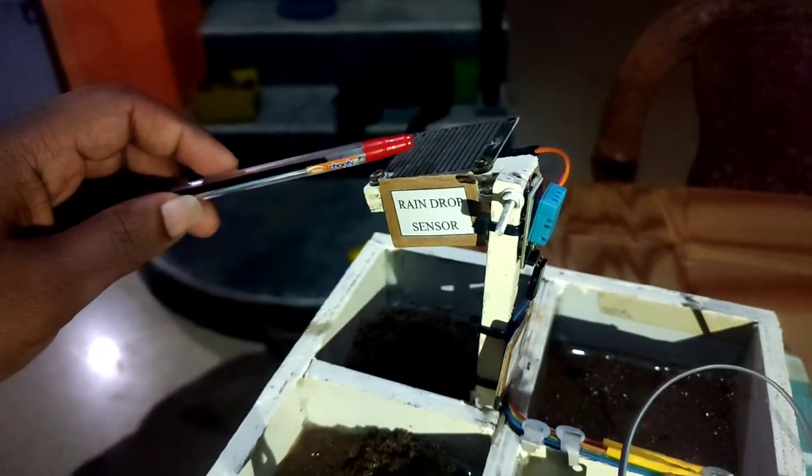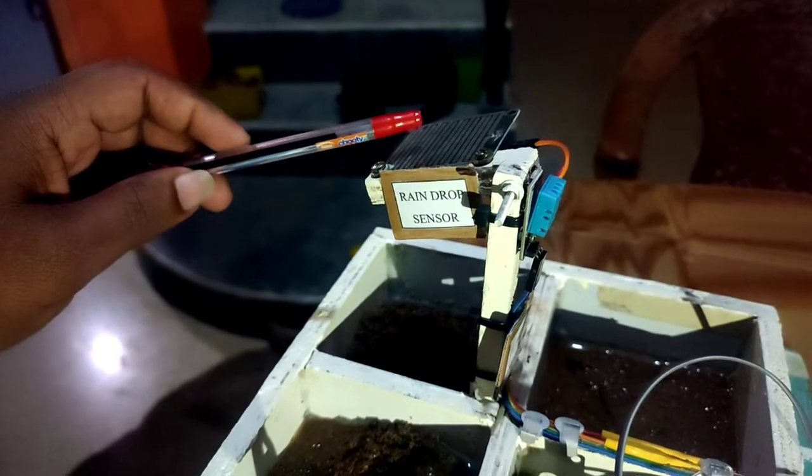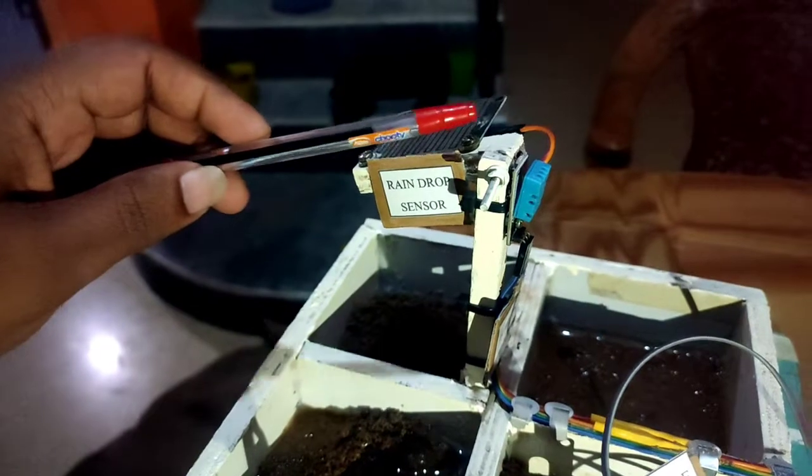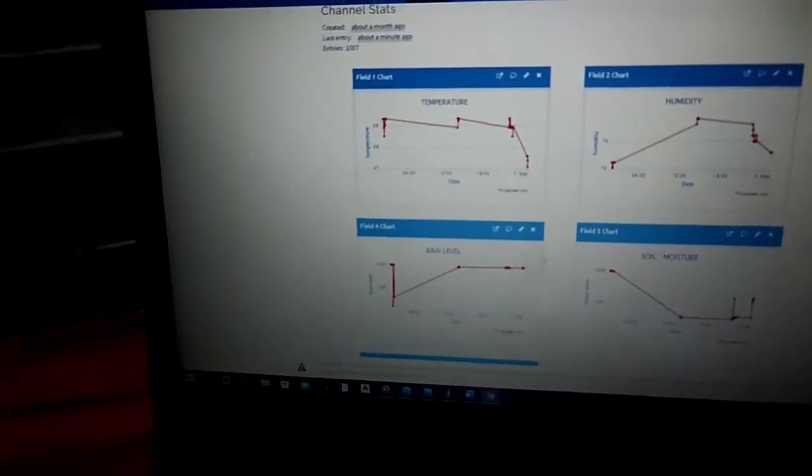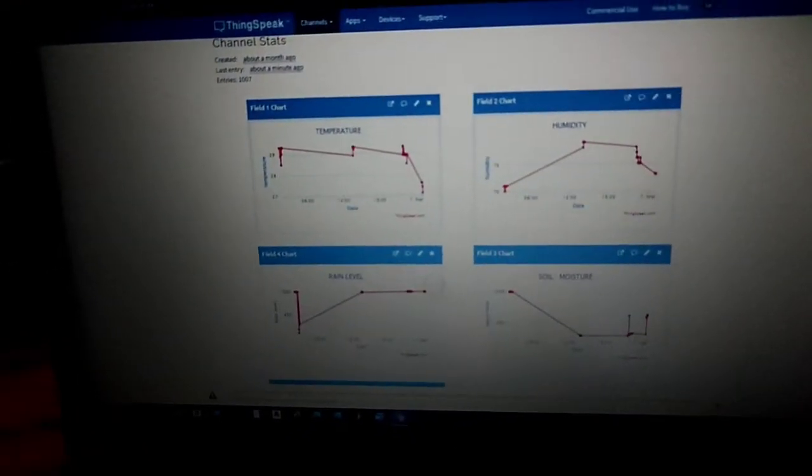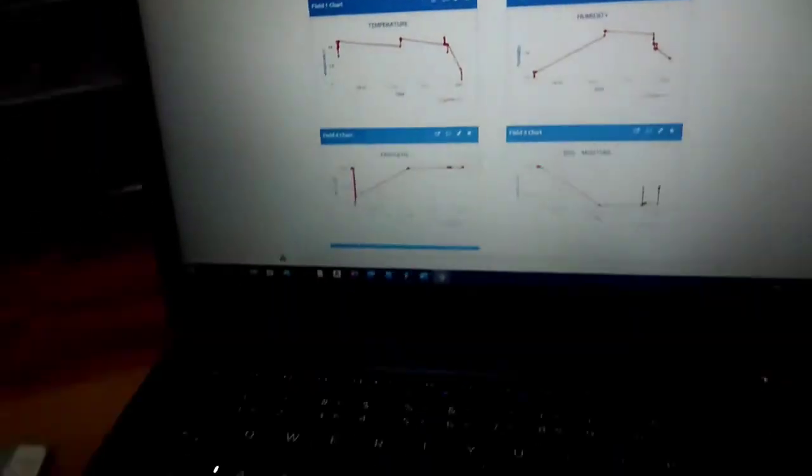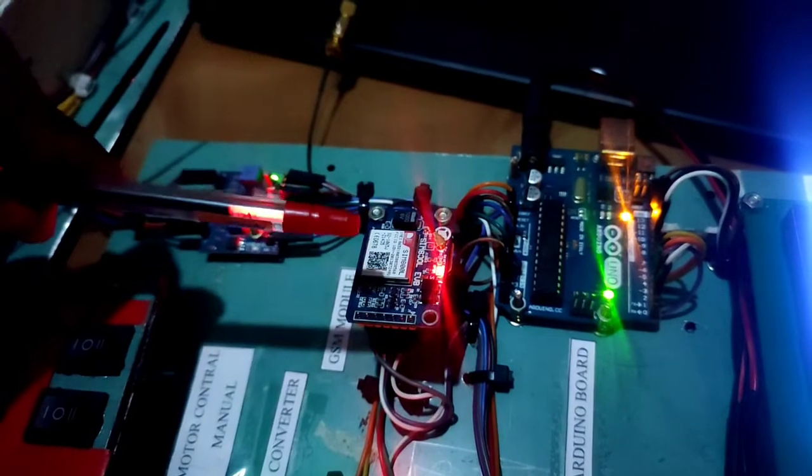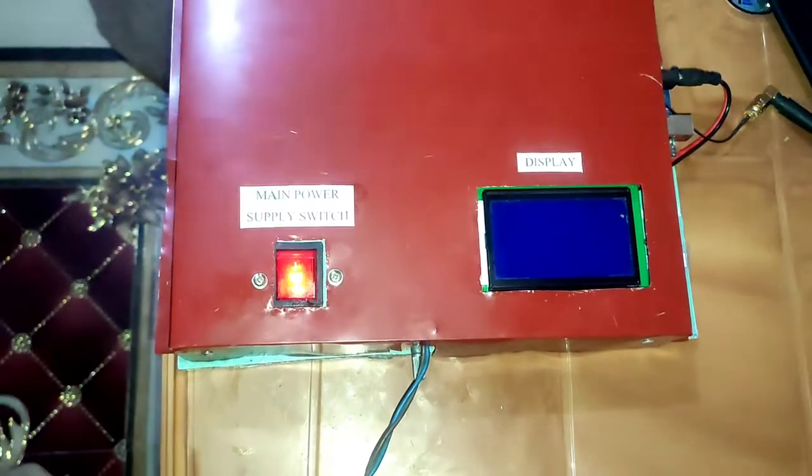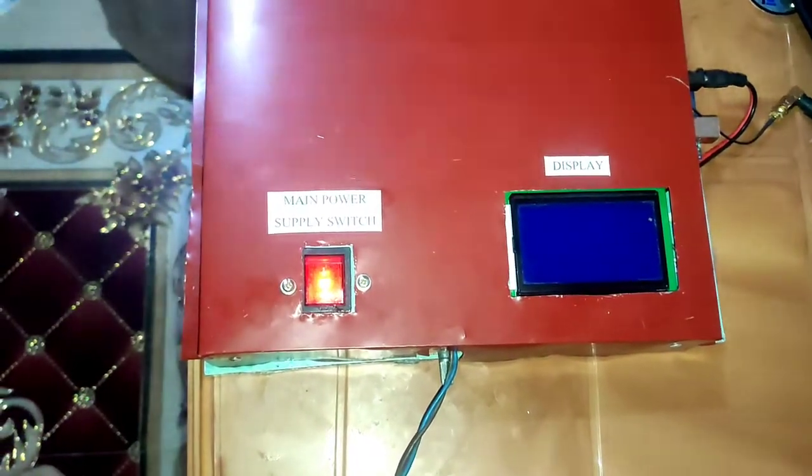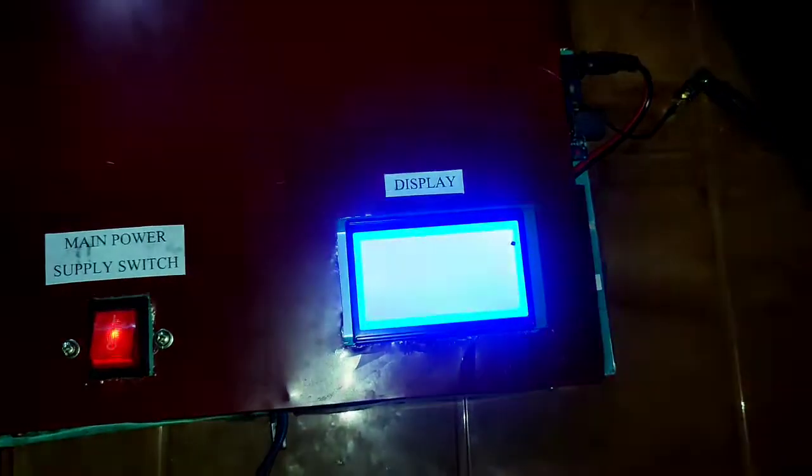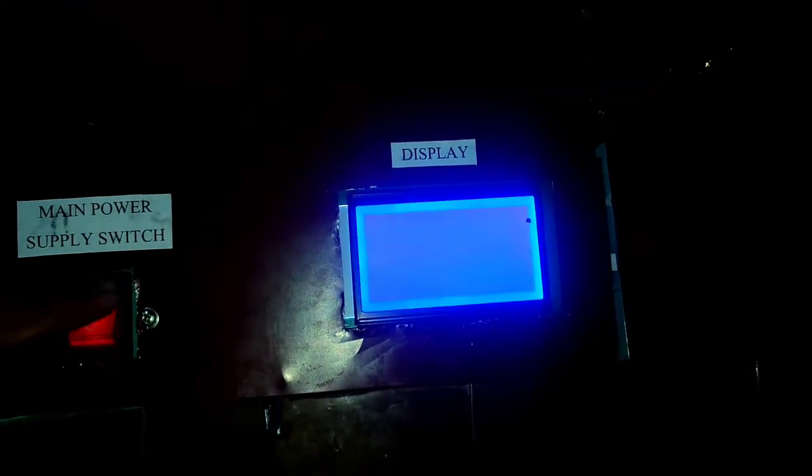Here the rain drop sensor gives the amount of rainfall as an analog signal to the Arduino board. Finally, all the above data is updated on the ThingSpeak server using the SIM 800L GSM module with GPRS technology. Let's see the project. First, main supply switch on.